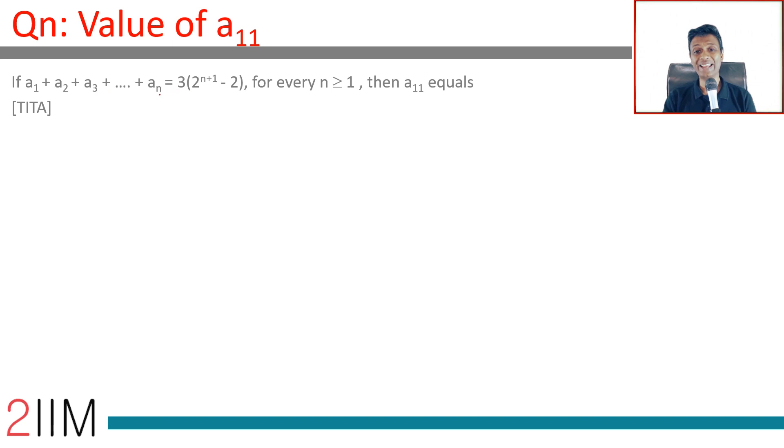a₁ plus a₂ plus a₃ all the way till aₙ is 3 times 2 power n plus 1 minus 2 for every n greater than or equal to 1, and a₁₁ equals? Let's find a₁ with 3 times 2 square minus 2, which is 3 times 4 minus 2.